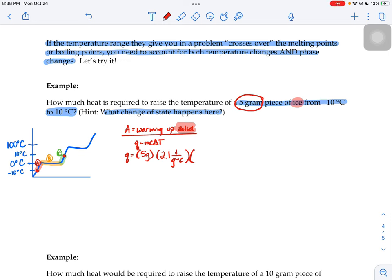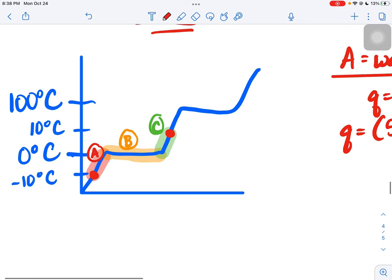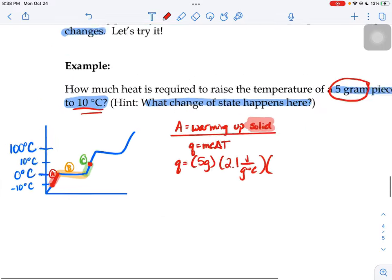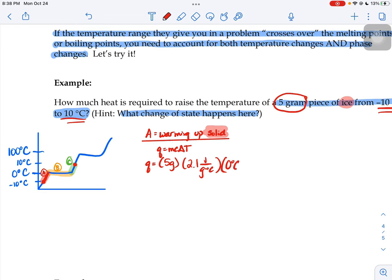Now we need the delta T. Be careful - the delta T is not just negative 10 to positive 10, because it doesn't stay a solid that whole temperature range. We are doing just part A, just this section of the graph. The final temperature for section A is zero degrees Celsius. It started at negative 10, so zero minus negative 10. This gives us 105 joules.